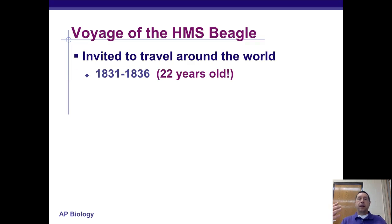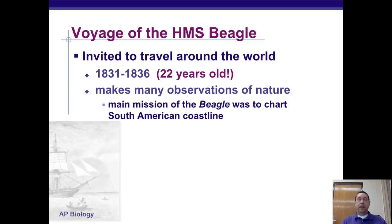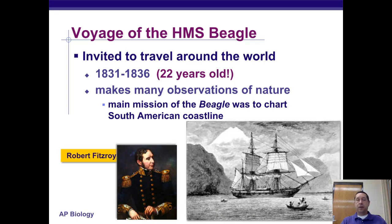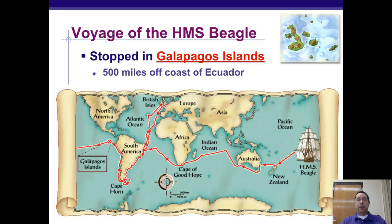In 1831, Darwin had just gotten out of school at age 22 and was invited to be the naturalist on the HMS Beagle. The main mission was to chart the South American coastline, though it traveled throughout the entire world. One of the things that had a big impact on Darwin's ideas was the time spent on the Galapagos Islands, a group of islands about 500 miles off the coast of Ecuador.